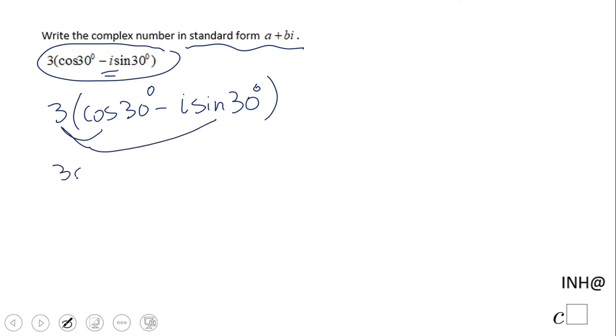We have 3 cosine of 30 degrees minus 3i sine of 30 degrees, and then we evaluate those two trigonometric functions. Cosine of 30 is square root of 3 over 2, and sine of 30 is 1/2.